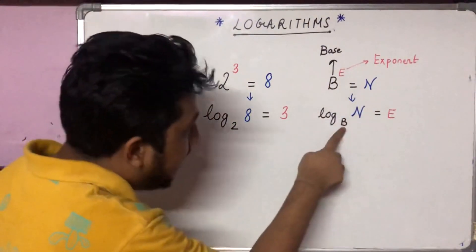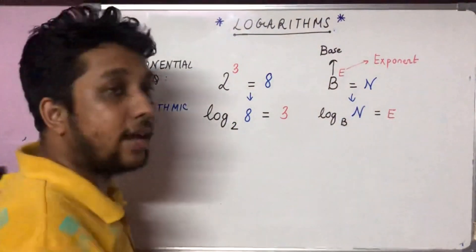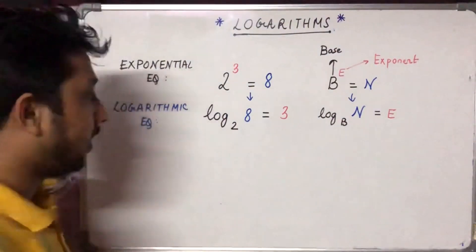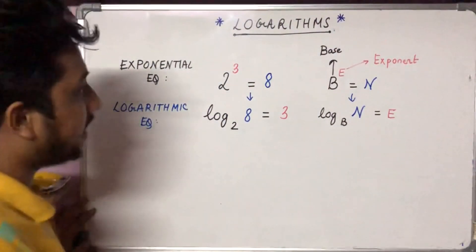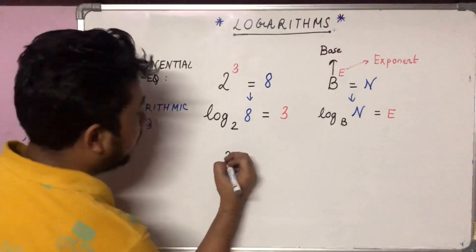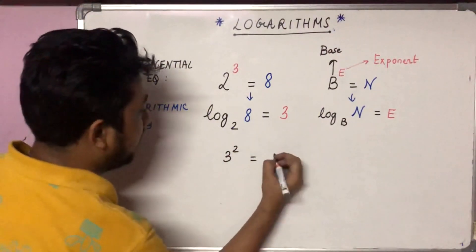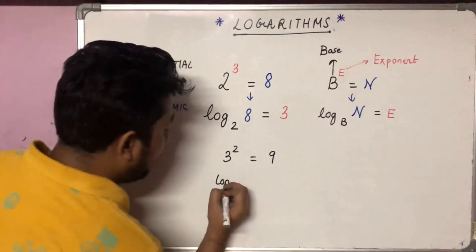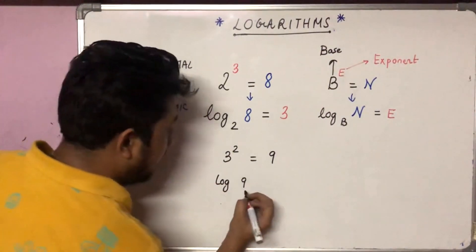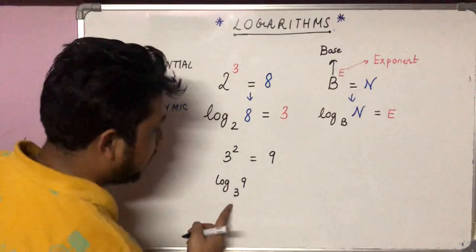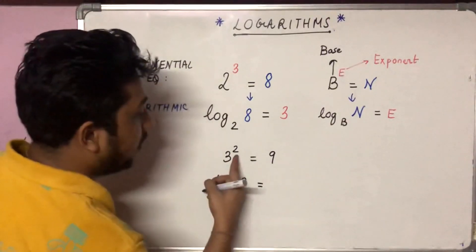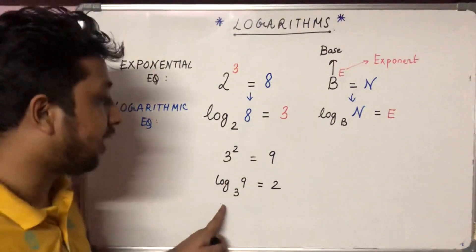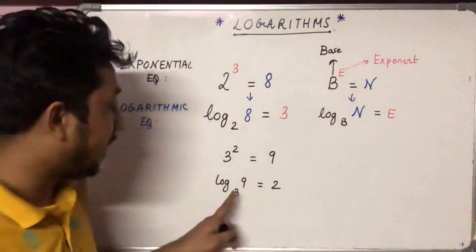This is the basic concept of log. For example, log of nine to the base three equals two. That means three to the power two equals nine.